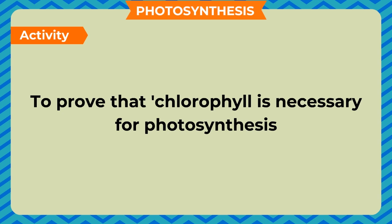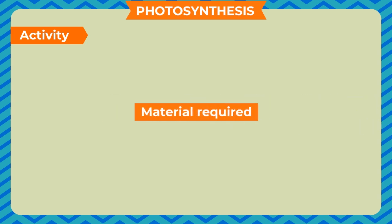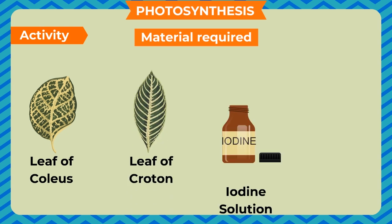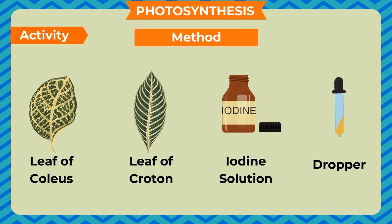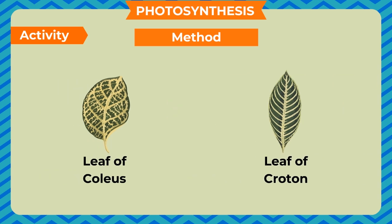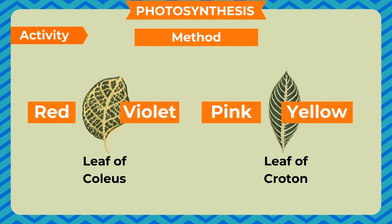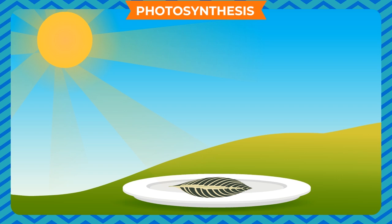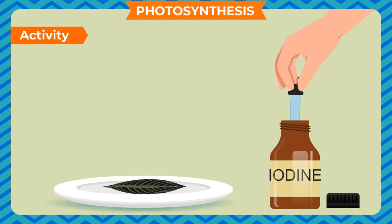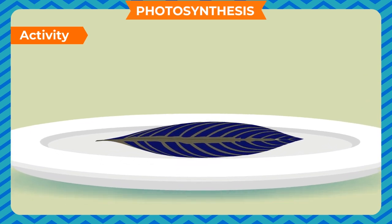Activity to prove that chlorophyll is necessary for photosynthesis. Materials required: a leaf of a coleus or croton plant, iodine solution, and a dropper. Method: the leaves of coleus and croton plants are partly green and partly non-green (red, violet, pink, or yellow). Take a leaf that has been exposed to sunlight for a few hours and perform an iodine test. Observation: the green part of the leaf turns blue-black, while the non-green part remains the same. Conclusion: this proves that the green pigment chlorophyll is necessary for photosynthesis.